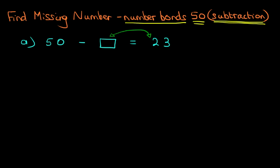We're not going to do that this time. That is one method. We're now going to look at a slightly different method. What this question says is 50 minus something equals 23, so basically what number added to 23 is going to give us 50?